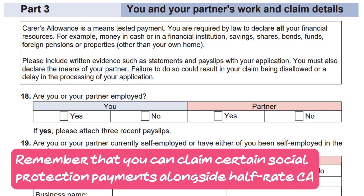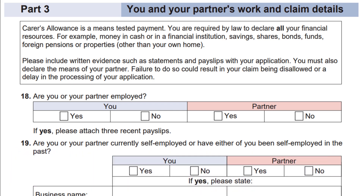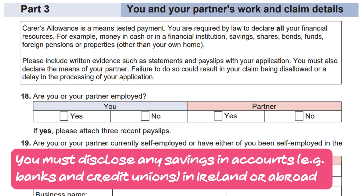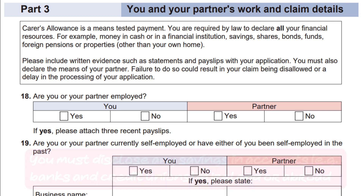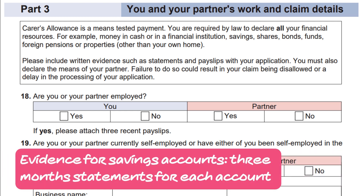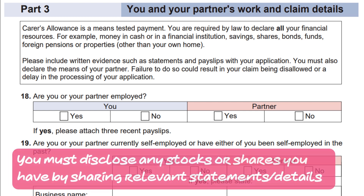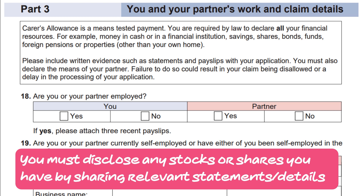Remember that you can claim certain social protection payments alongside half-rate Carers Allowance. You must disclose any savings in accounts, such as banks and credit unions, in Ireland or abroad. You can provide evidence for these savings accounts with three-month statements for each account. You must disclose any stocks or shares you have by sharing relevant statements or details.